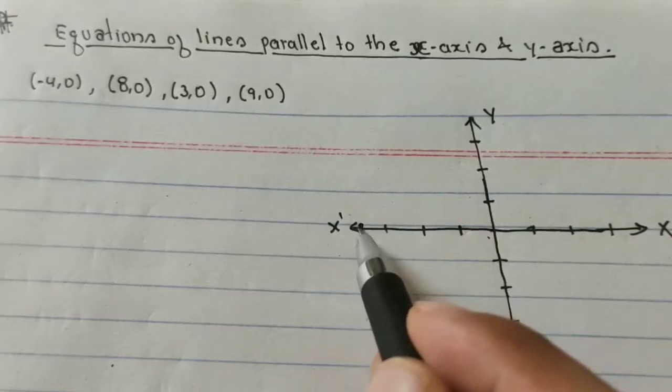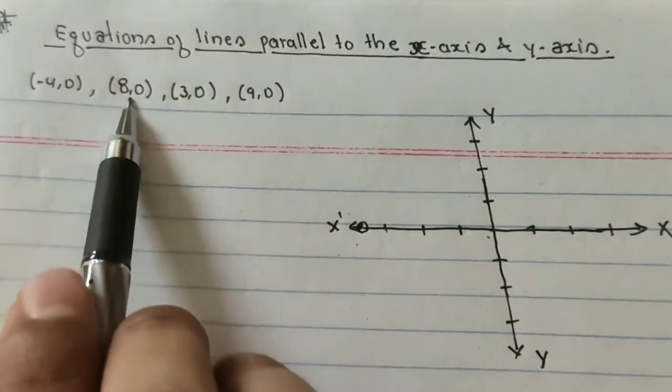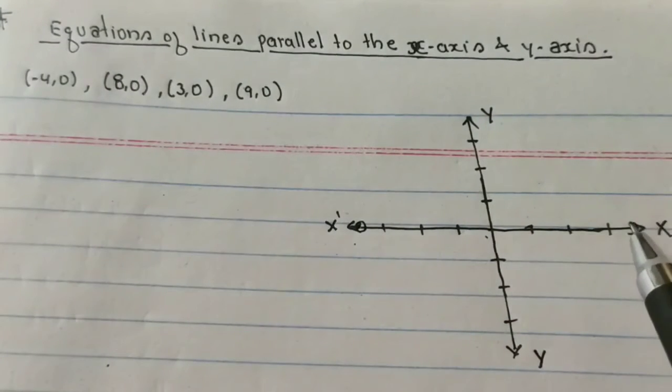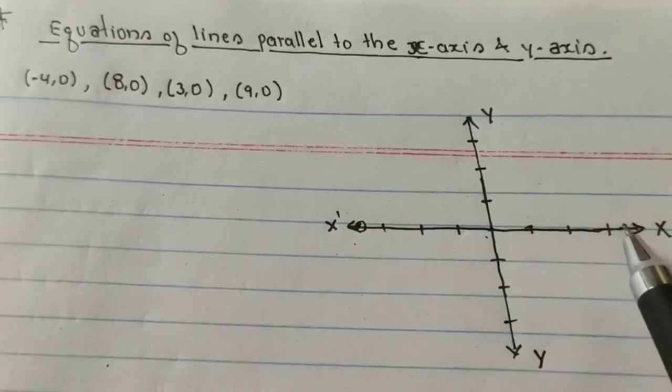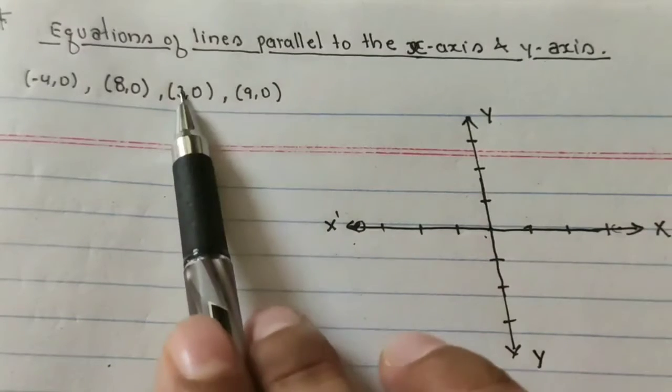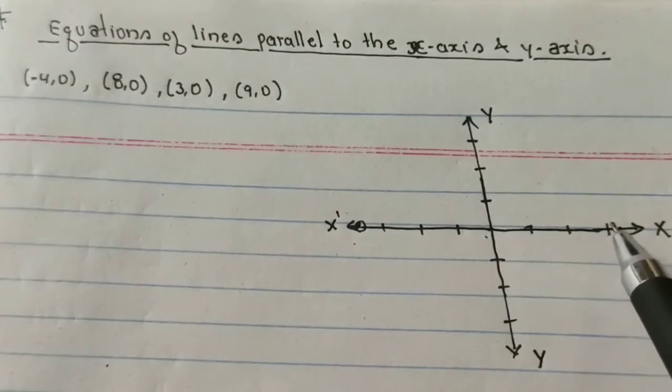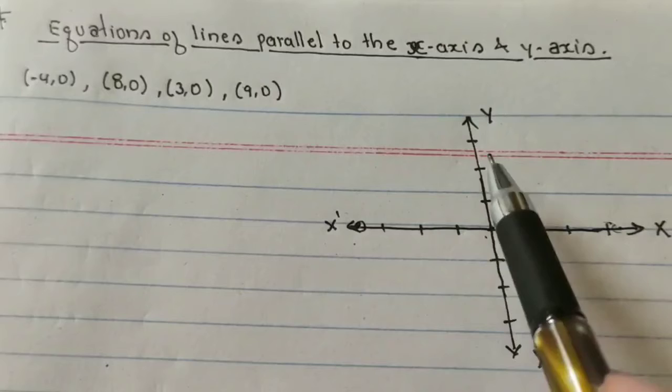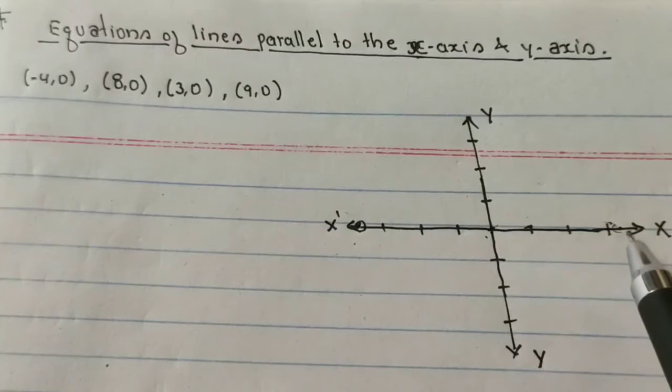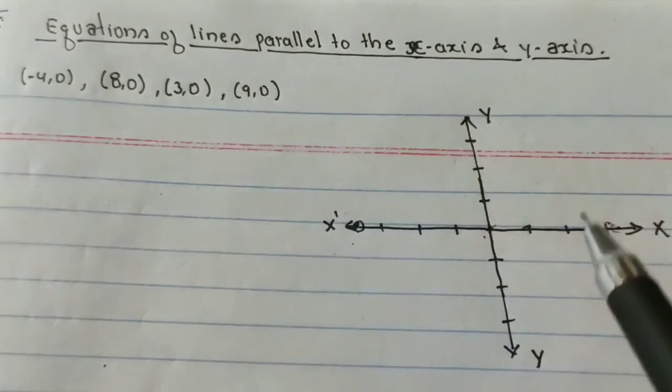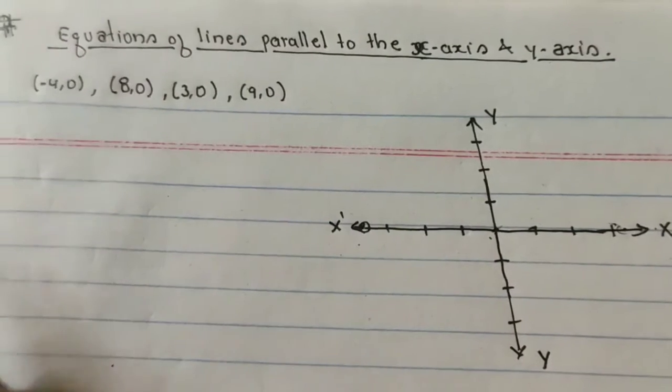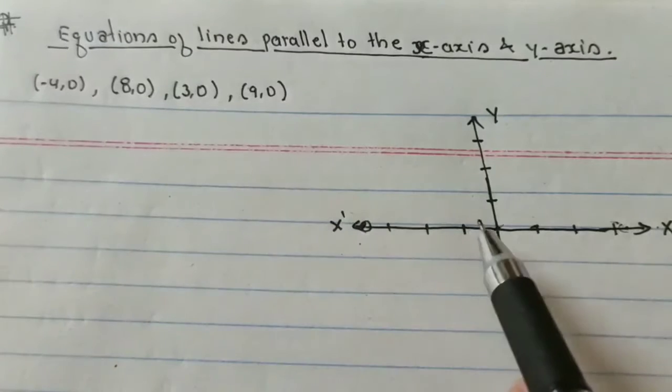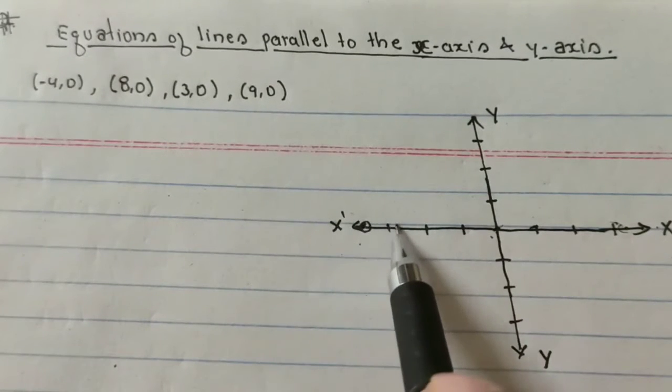Second is (8, 0), somewhere here suppose I'm telling here 8 and 0, getting on x-axis only. Third is (3, 0), getting 3 and 0 again. Y is 0, getting on the same line x-axis. (9, 0) same again, getting on the x-axis only.